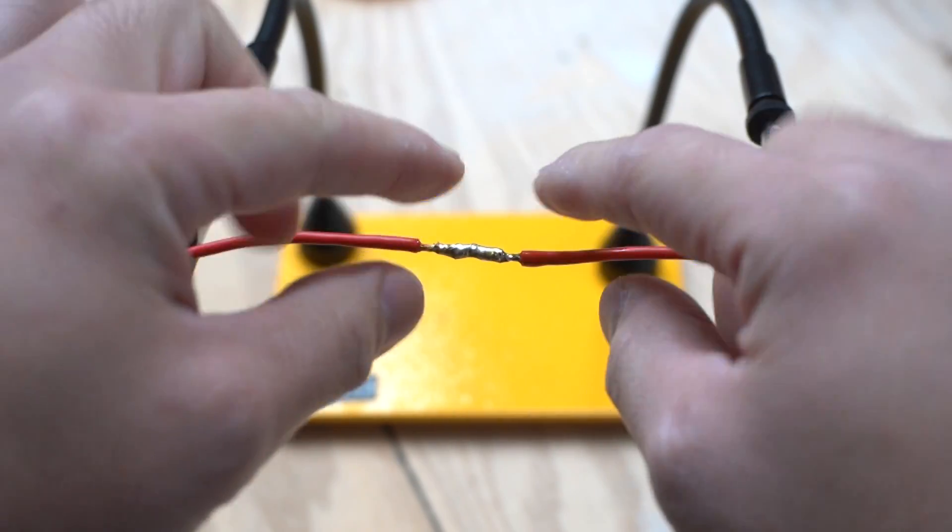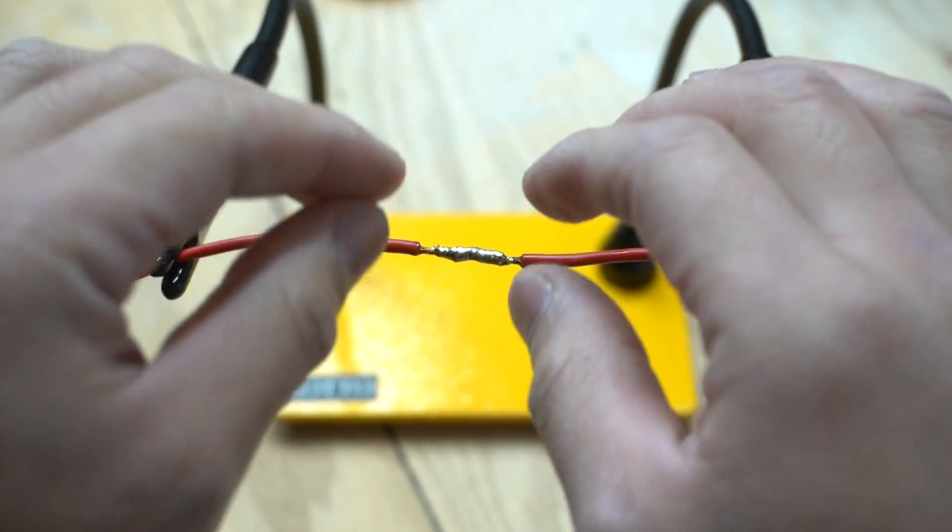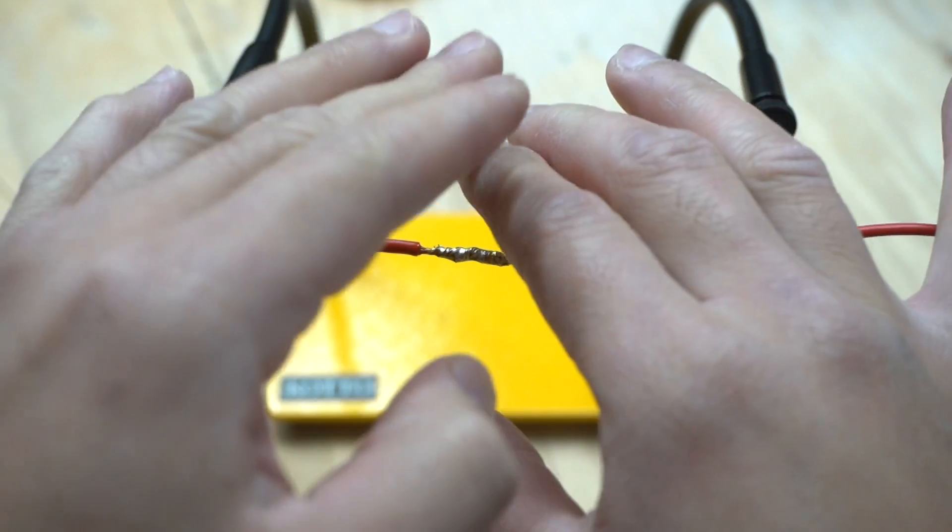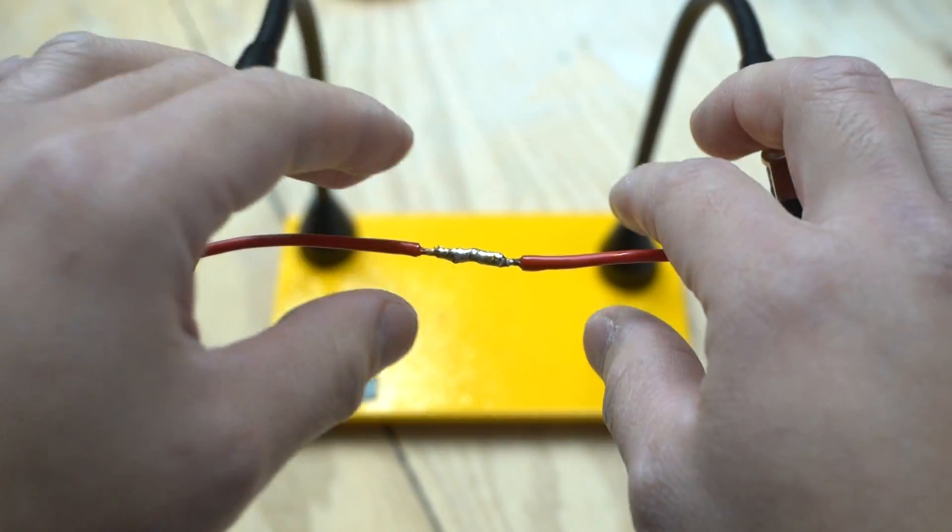Now that you're done soldering this, you should have a nice connection. You got to let it cool down for just a little bit. You don't want to go and touch this because it's still hot. So give it a few minutes to cool down. Once that's cooled down, then we can apply the shrink wrap.